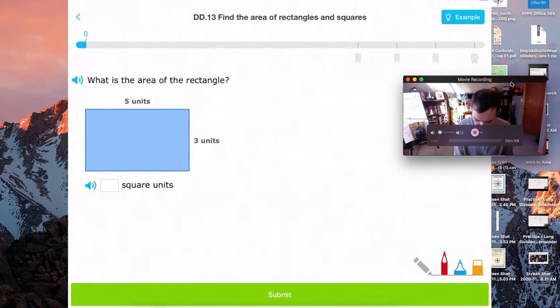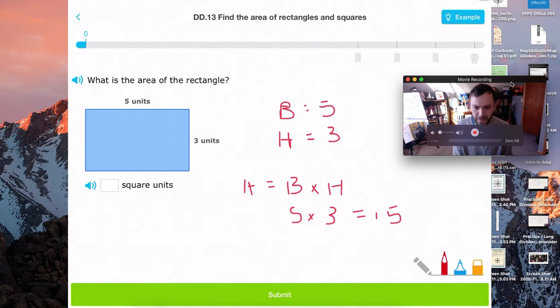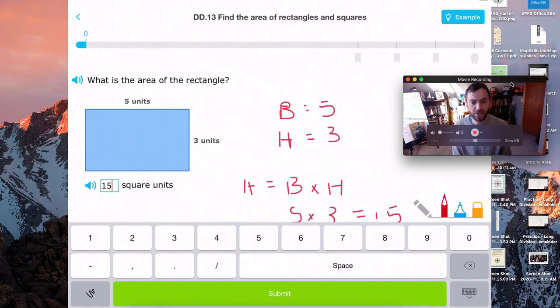So it would be, let's go ahead and just record that, right? So the base equals five, the height equals three. So the area will equal base times height or five times three. Five times three equals 15. That pen and IXL just isn't the same as notability, is it? All right. That was 15 square units.